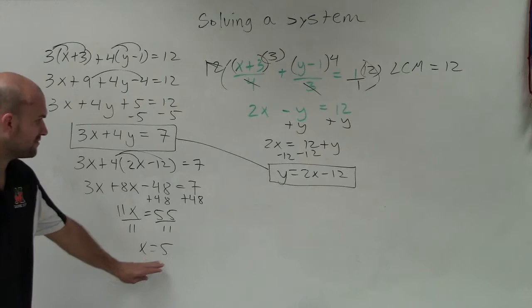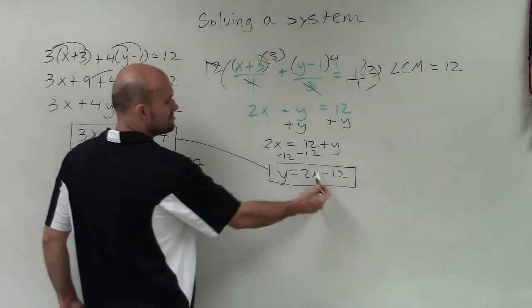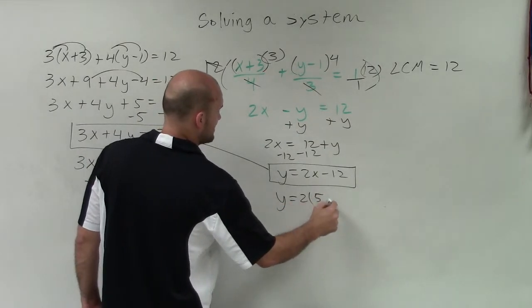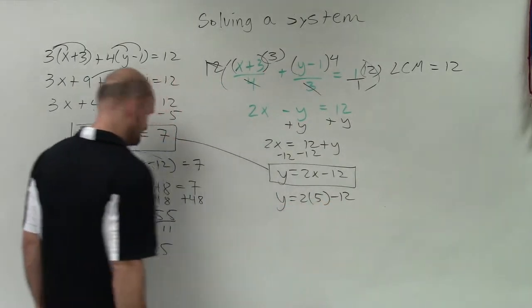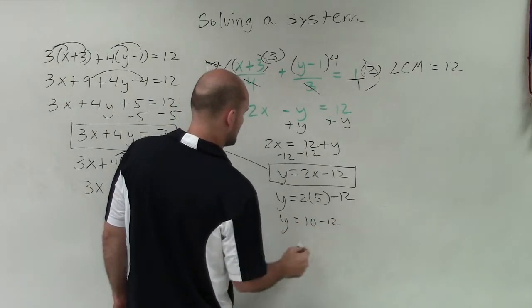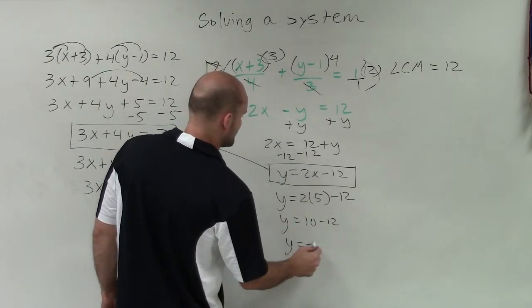So now I know the value of x. I plug in that value of x back into this equation to solve for the value of y. So y equals 2 times 5 minus 12. 2 times 5 is 10, minus 12. 10 minus 12 is negative 2. y equals negative 2.